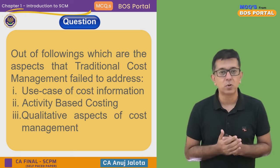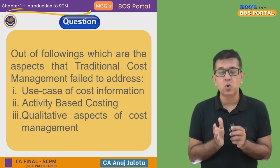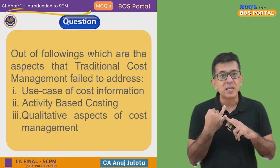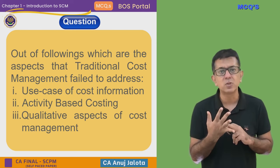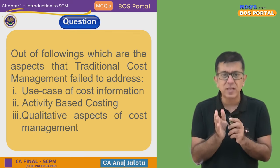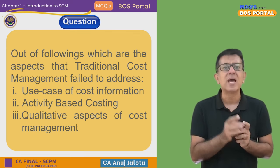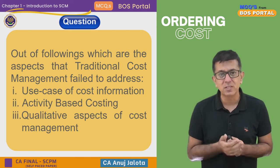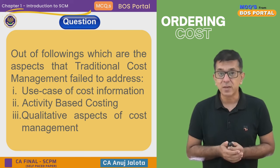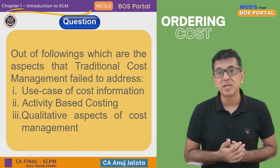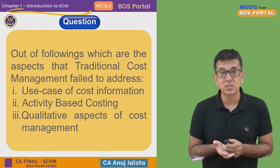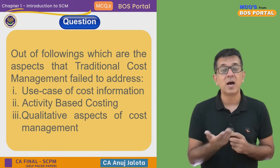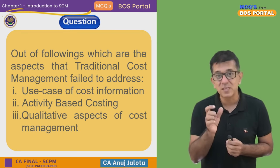Activity-based costing is a part of modern costing. It says every cost in this world does not relate only to machine hours, labour hours, labour cost, material cost, or prime cost. Every kind of cost has its unique cost drivers. For example, ordering cost is driven by number of orders, setup cost by number of setups, engineering cost by engineering hours, and R&D cost by R&D hours.